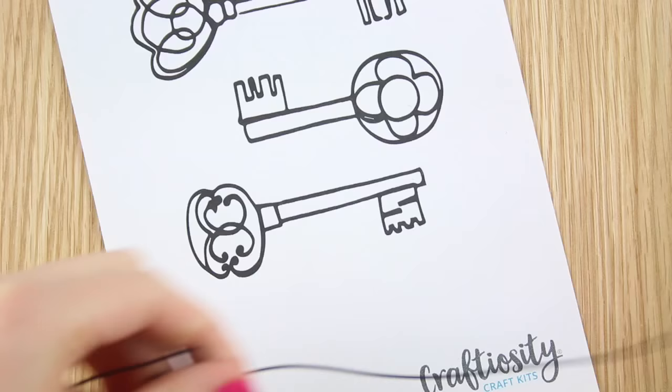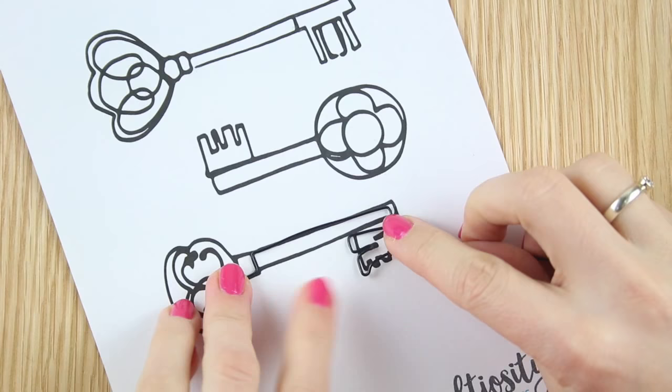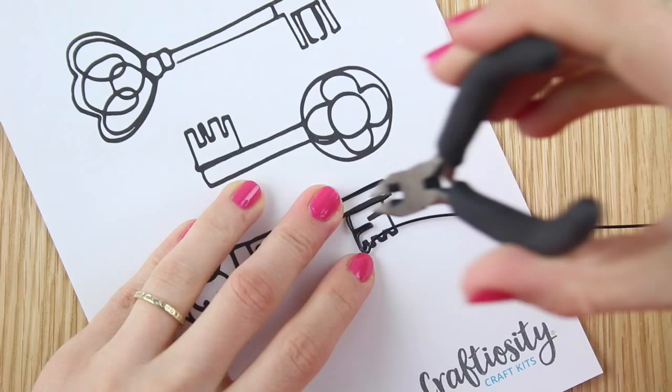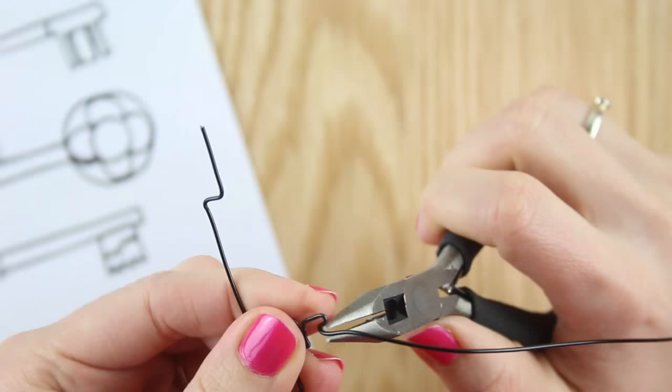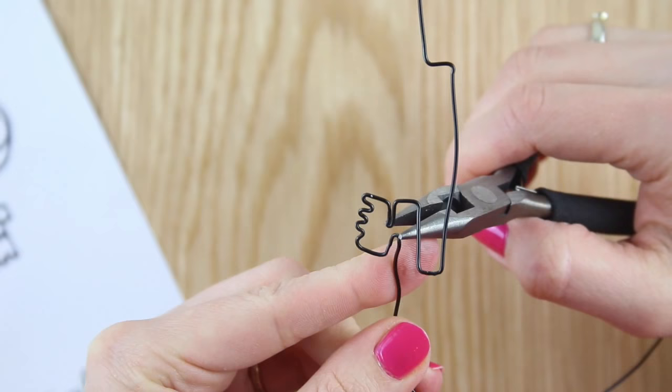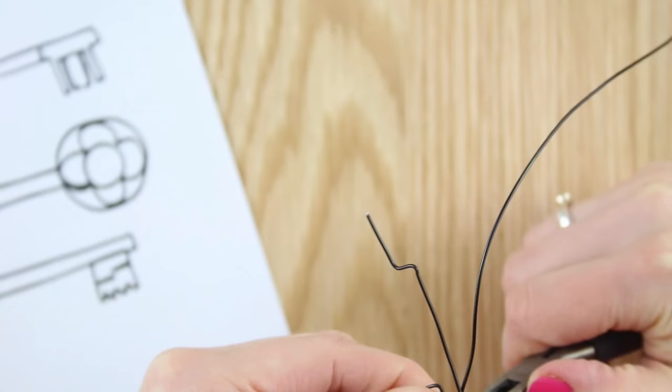For your final key start as before allowing an extra one centimeter of wire. Follow the template as shown and then start to make the bit of the key. Bending the wire in, making the teeth, bending the wire back in again and then bringing it up. Double back on the bit of the key and along to the left to complete the stem.